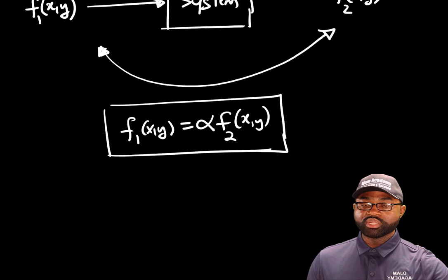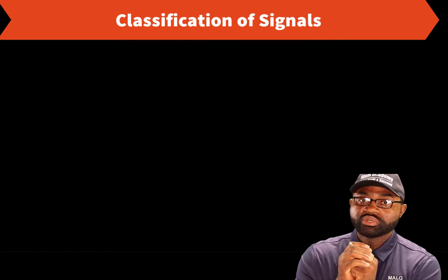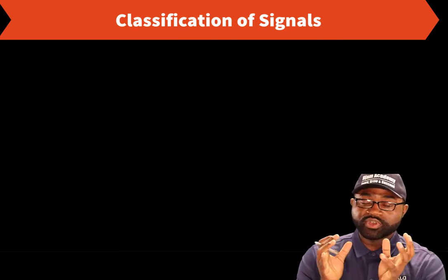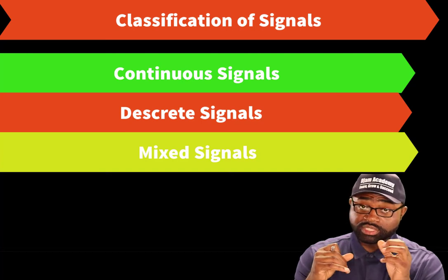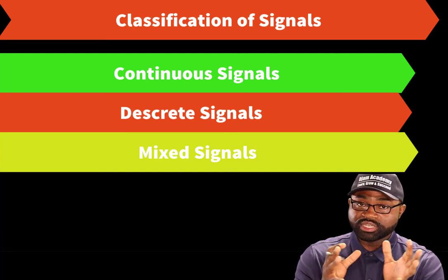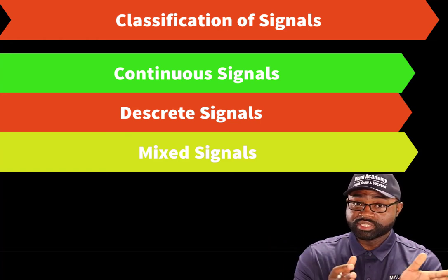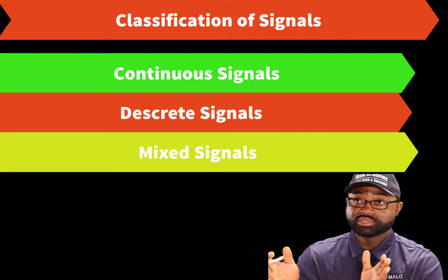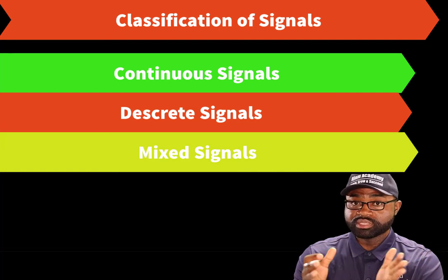This leaves us with the question: how can we classify different signals? With respect to this lecture, we will broadly classify signals into three categories: a signal can be a continuous signal, a discrete signal, or a mixed signal.